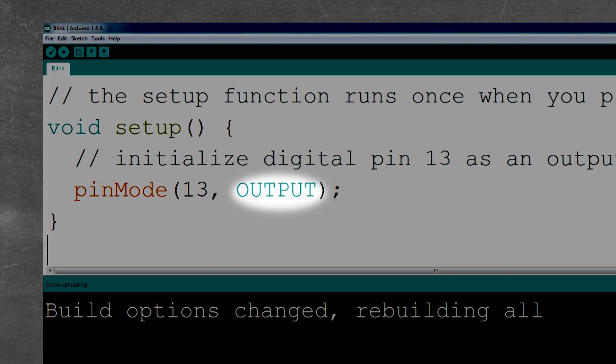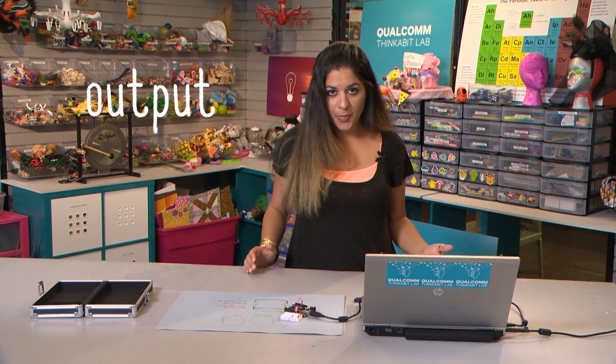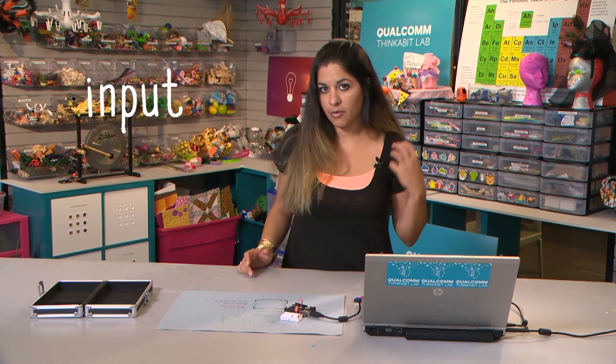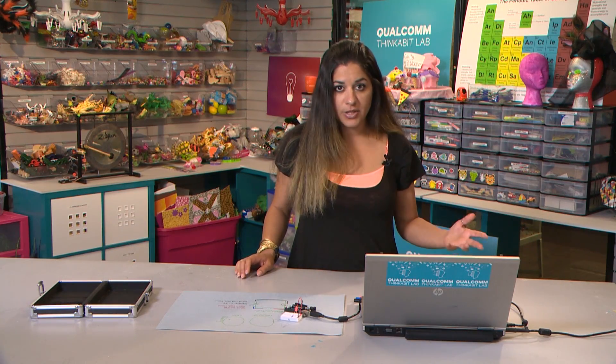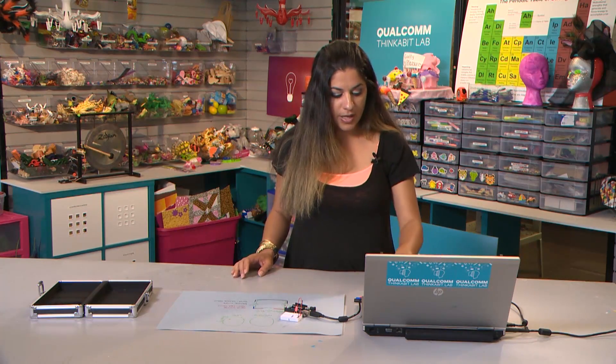So this says 13. Next, it says output. So again, pin mode. This is the pin over here and then this is its mode, which is an output because we're outputting information. We're not inputting information. So as I'm talking to you, I'm actually outputting stuff. If I were to stop here and try to listen, I'm inputting information. So that's the difference there. And we're only going to be outputting for right now. So we're going to leave that as it is.